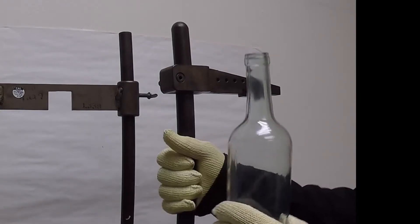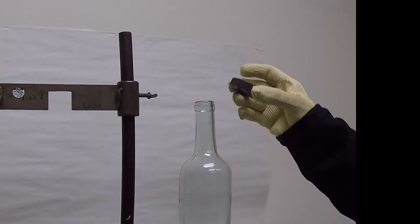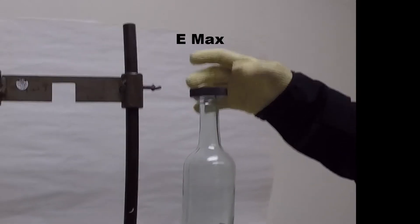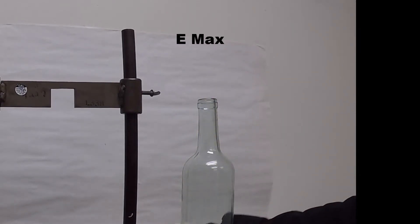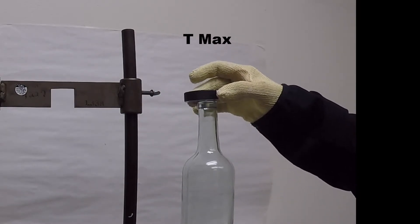The next gauges are handheld go, no-go gauges. We'll start with the E max gauge. It should go on the top of the finish, but not over the bead. The next gauge is a T max gauge. It should go over the bead.